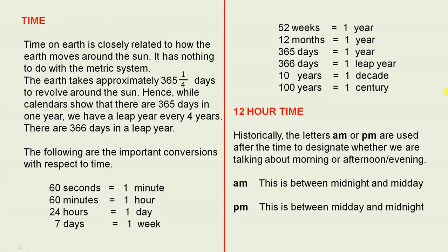Time on Earth is closely related to how the Earth moves around the Sun. It has nothing to do with the metric system. The Earth takes approximately 365 and a quarter days to revolve around the Sun. Hence, while calendars show that there are 365 days in one year, we have a leap year every four years. There are 366 days in a leap year.